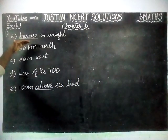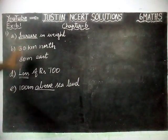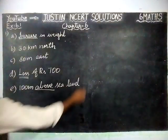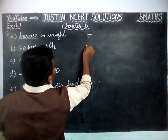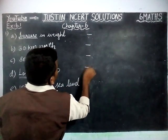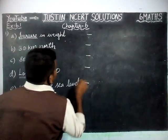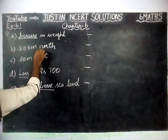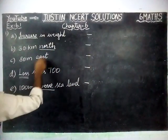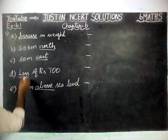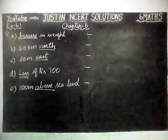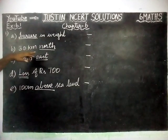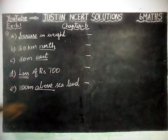They have given 5 statements, and for these 5 we are going to find opposites. We have to understand the key points. The key words are: increase, north, east, loss, and above. These are all the key words, and for all these key words we have to find opposites.